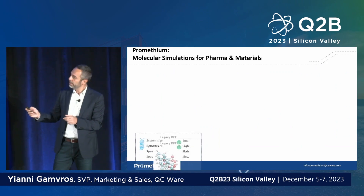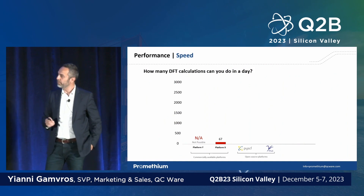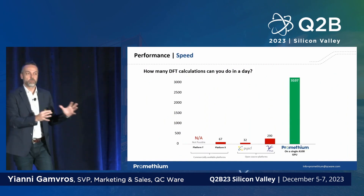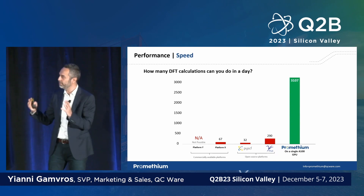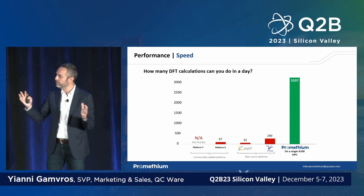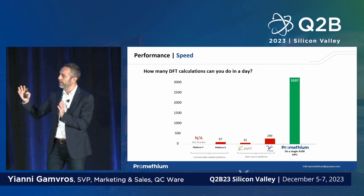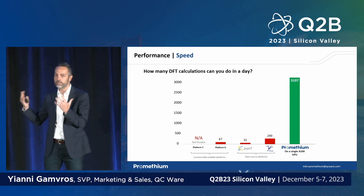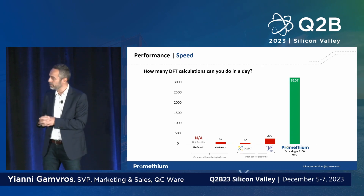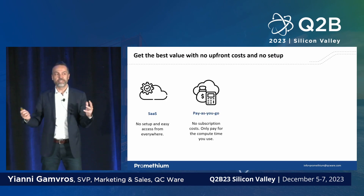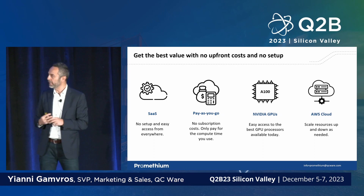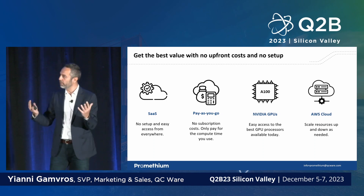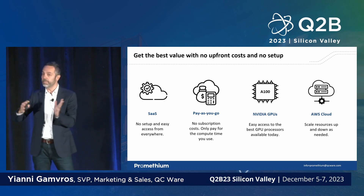To give you a sense of the performance difference: using legacy codes you might complete up to 300 DFT calculations per day, but with Prometheum you're an order of magnitude faster because it's written from scratch to run on GPUs. Prometheum follows the standard enterprise B2B software model — it's SaaS, pay-as-you-go, uses the latest NVIDIA GPUs on the AWS cloud, has no barrier to entry, no upfront cost, and you can easily scale up and down.